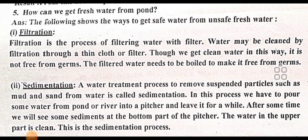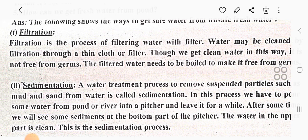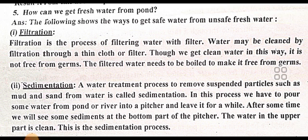Descriptive question five: How can we get fresh water from ponds? The following are the ways to get fresh water from unsafe water. Filtration: Filtration is the process of filtering water with a filter. Water may be cleaned by filtration through a thin cloth or filter. Though we get clean water this way, it is not free from germs — the filtered water needs to be boiled to make it free from germs. Sedimentation: A water treatment process to remove substance particles such as mud and sand from water is called sedimentation. We pour some water from a pond or river into a pitcher and leave it for a while. We will see some sediments at the bottom, and the water in the upper part is clean — this is the sedimentation process.